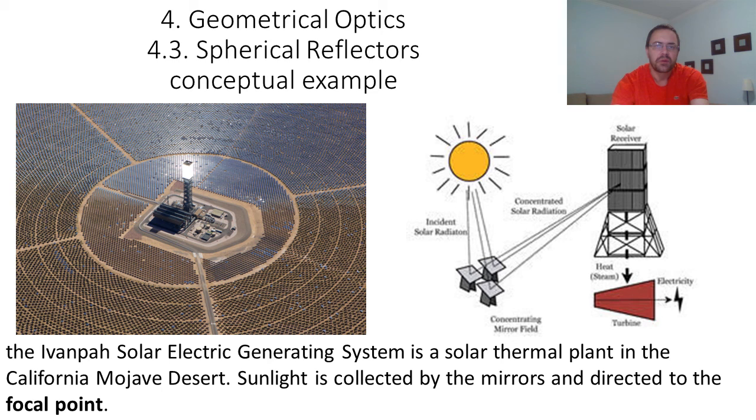Another example is a solar thermal plant. There is a bunch of mirrors that are arranged to form a giant concave mirror. The sunlight is concentrated at the focal point where it will boil water, and then the turbine converts this energy into electricity.